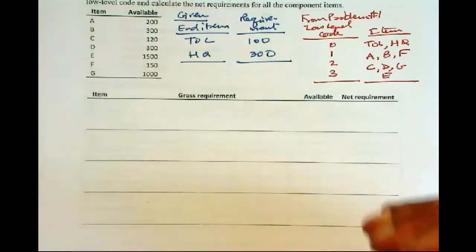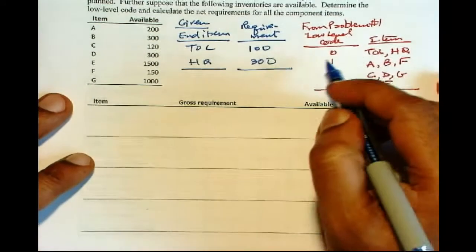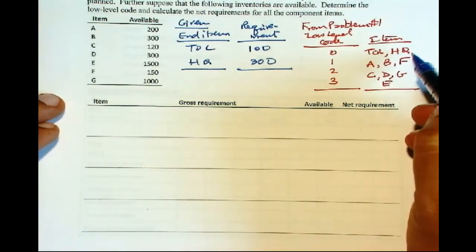If you do not follow this order, then that may not be the case and you will end up not computing the gross requirements accurately. And that is why it is very important that this order is followed. So we already have the requirements for the level 0 items, TOL and HQ.